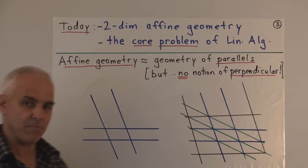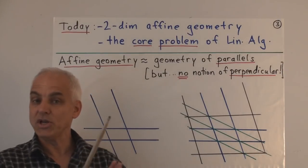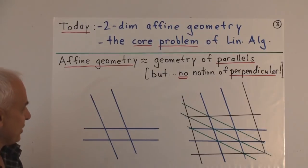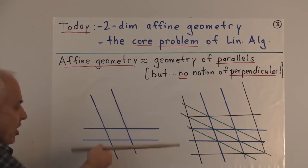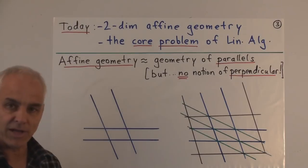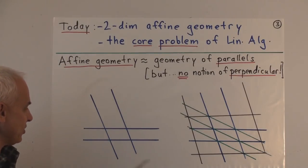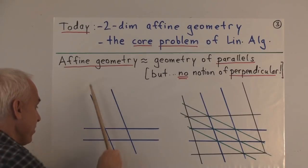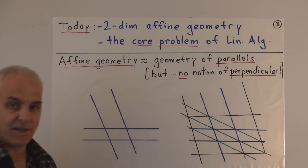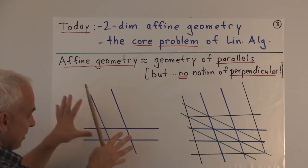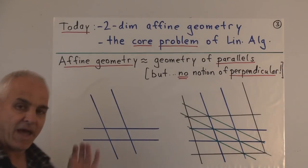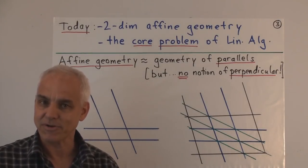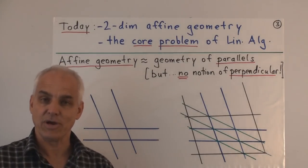How can we build up a geometry if we only know parallel lines? We can start with a line and then any line that's parallel to it. We start with two parallel lines in one direction and then another pair of parallel lines, and that's a basic configuration that gives us a little parallelogram. This can be used to set up something much more elaborate — what I call the affine grid plane.